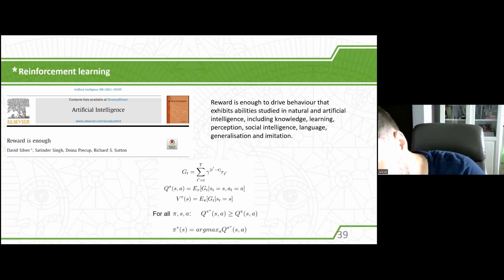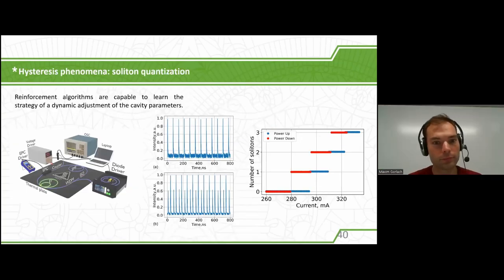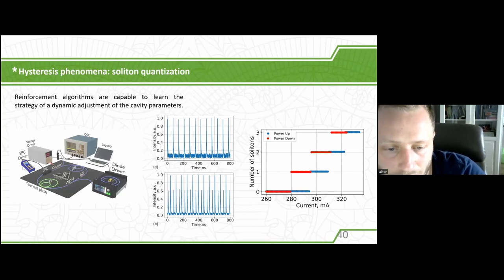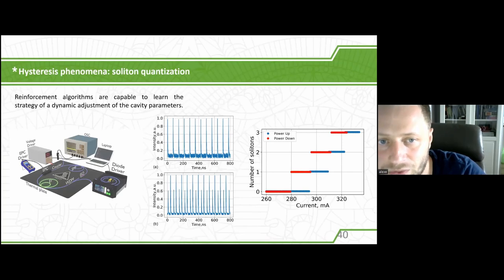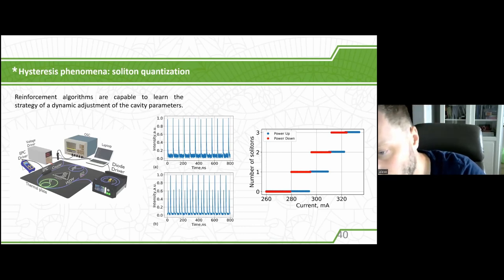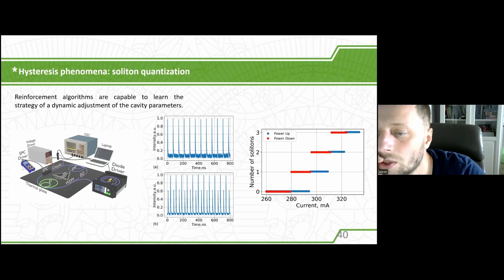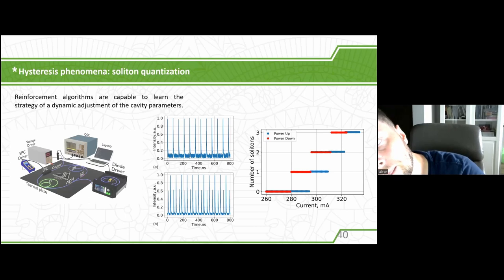Reinforcement learning is very interesting because it is capable of learning the strategy for dynamic adjustment of parameters. The other algorithms I described optimize a static fitness function distribution. However, if you have phenomena like hysteresis or bistability, where the algorithm should take a sequence of actions, this kind of algorithm is very powerful and very prospective. If you have nonlinear systems with multistability, our algorithm may help to solve such problems. So, are there any other questions from the audience?